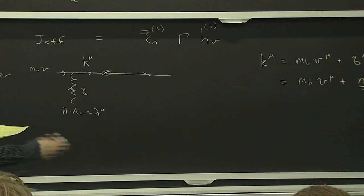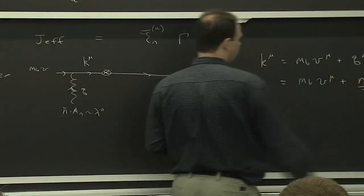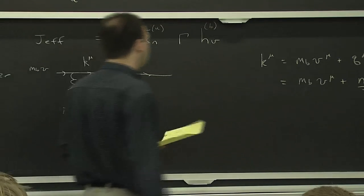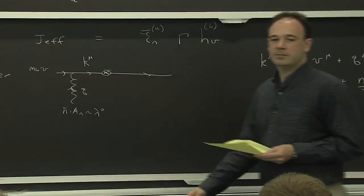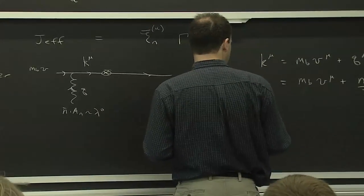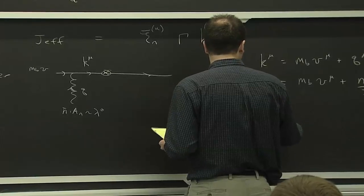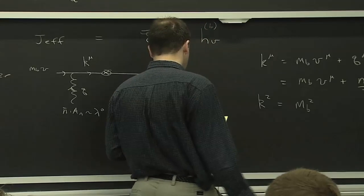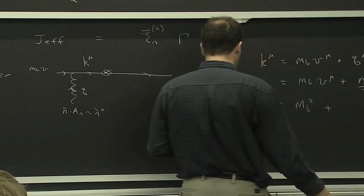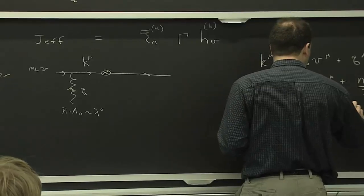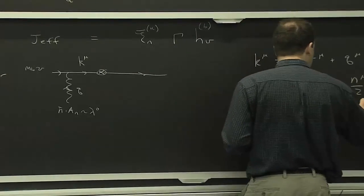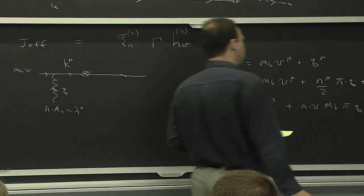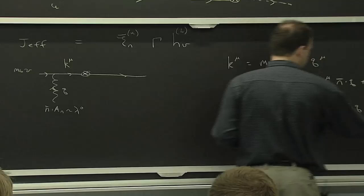So then k equals M_B v plus q. I can write q out in components since it's a collinear particle. The large piece is the n-bar dot q component. What's going to appear in the propagator is k squared minus M_B squared. If I square M_B v I get M_B squared; if I square q I get zero. But there's a cross term, plus terms that are suppressed.